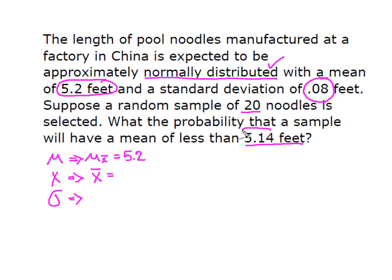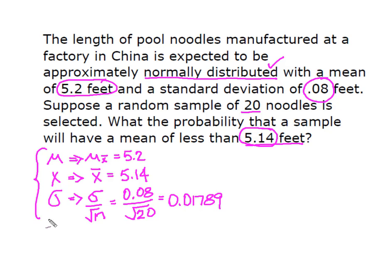Instead of x, I'm going to substitute in x-bar. We want to know the probability that the sample mean will be less than 5.14 feet. For the standard deviation, I'm going to use the standard error of the mean, which I'll find by taking the population standard deviation, dividing it by the square root of my sample size of 20. When I do that math, that gives me 0.01789 rounded off. These are the three pieces of information I need to work this question in Excel.